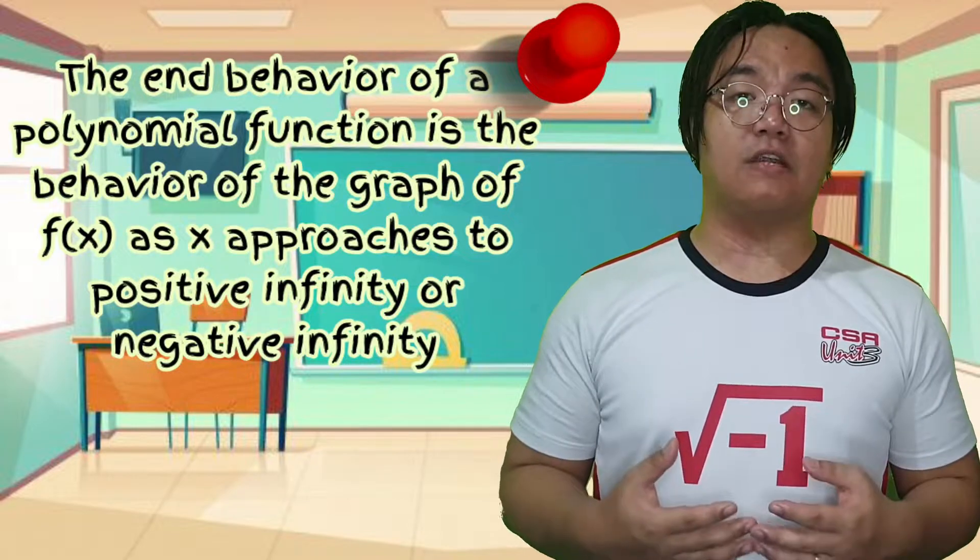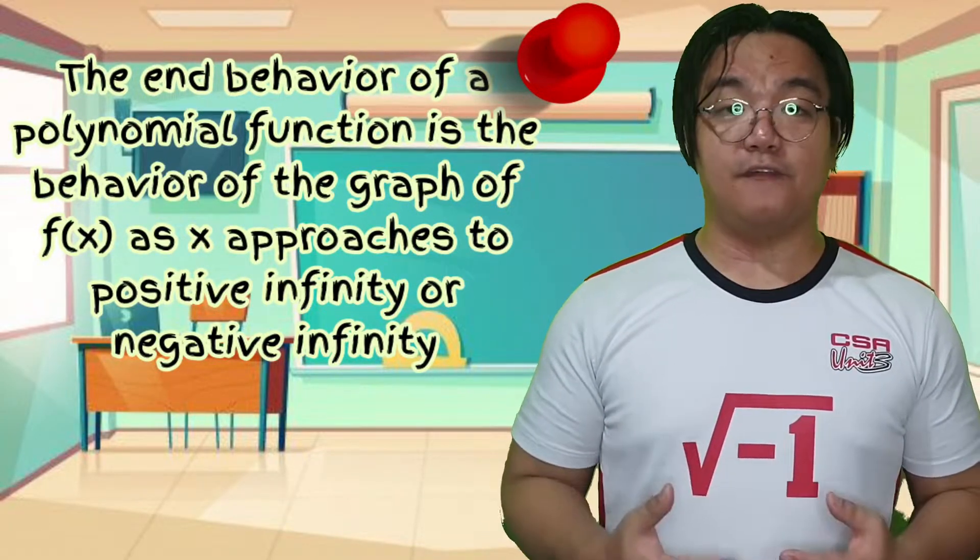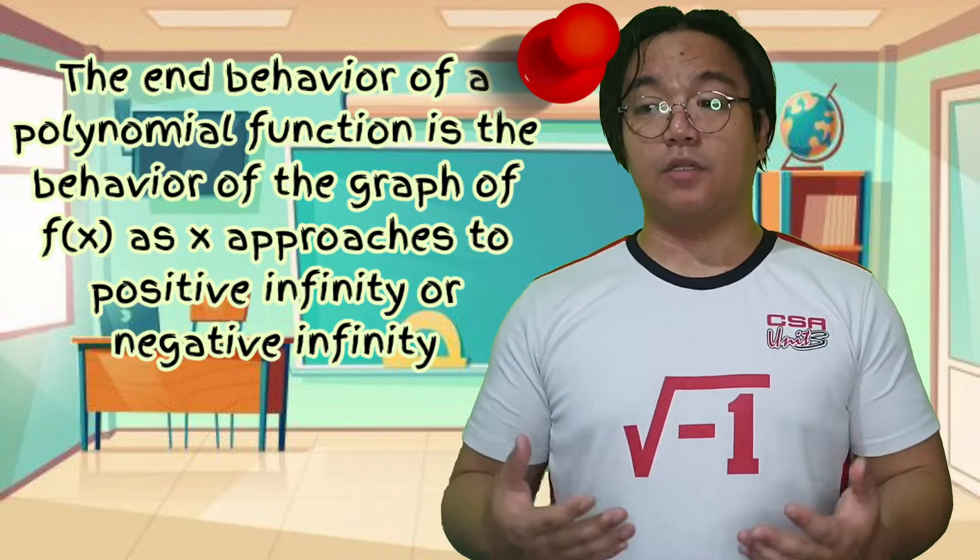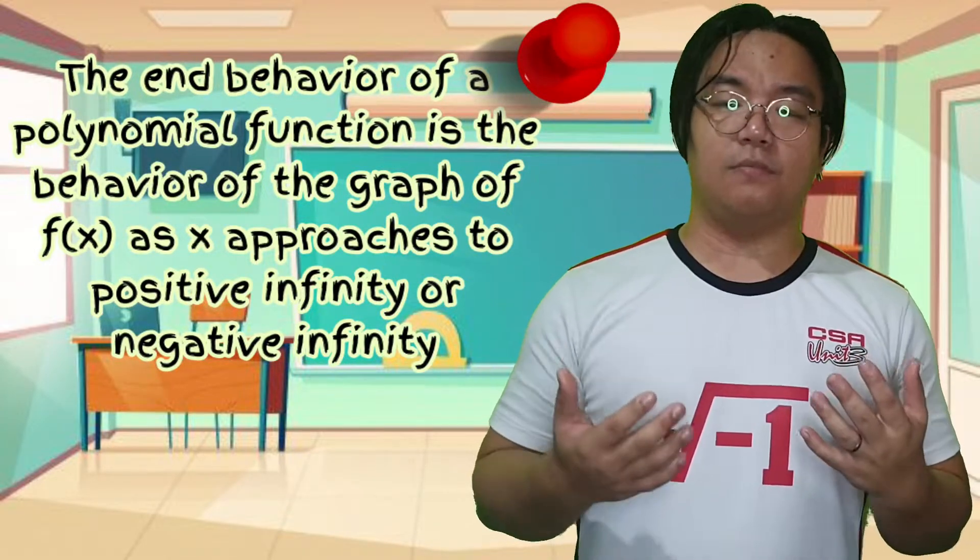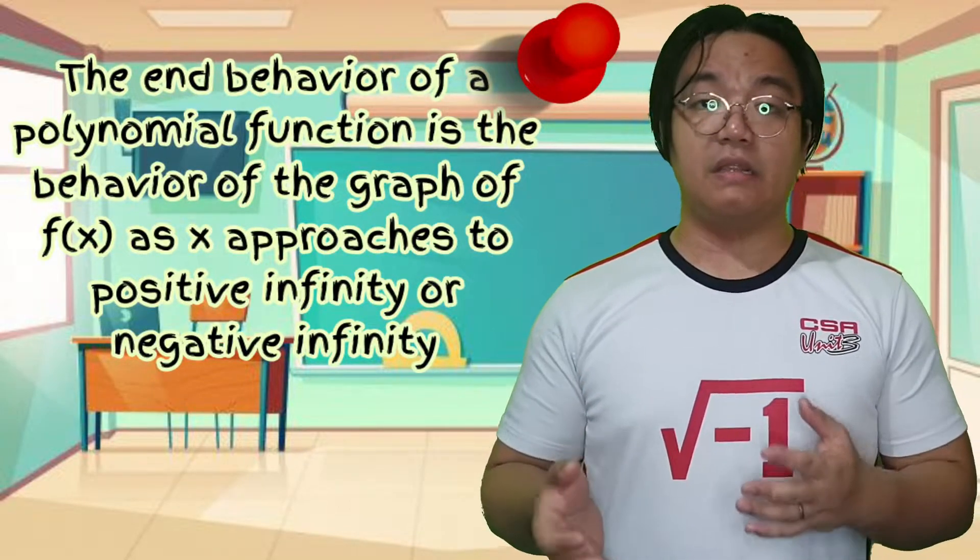The end behavior is the behavior of the graph of f(x) as x approaches positive infinity or negative infinity. In simple terms, what happens to the polynomial when x becomes really large or really negative?